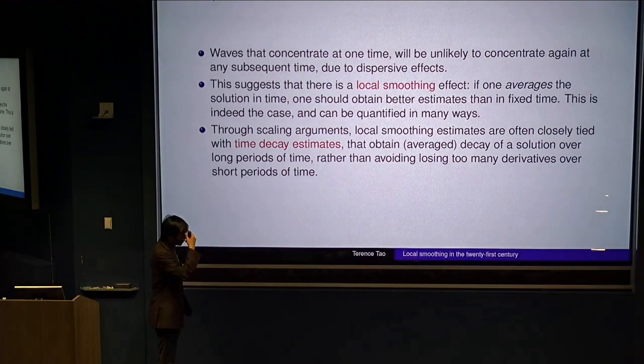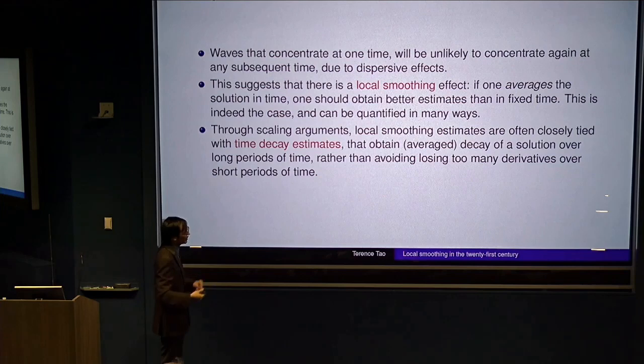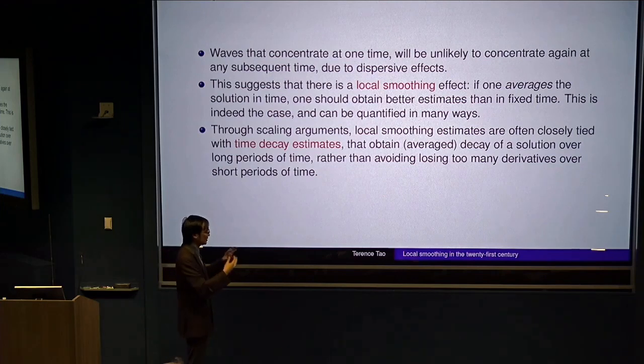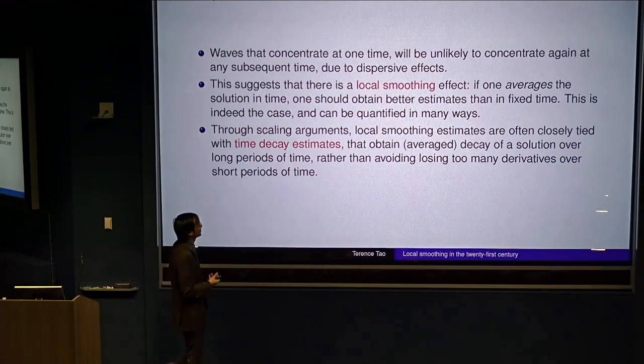And so this is a phenomenon called local smoothing. It means that even though waves can temporarily be very, very bad, they are actually fairly smooth. They have smooth solutions for most times. Just there's a few bad times where you can't control anything.